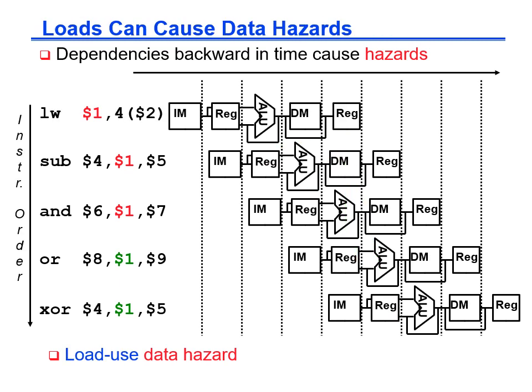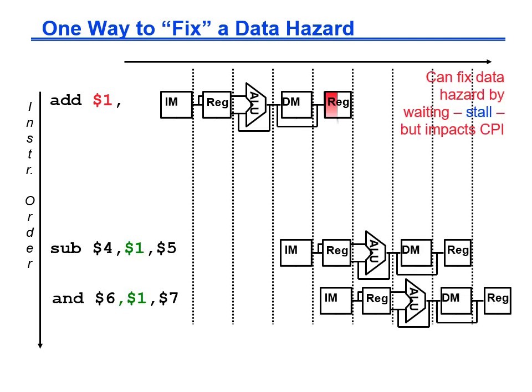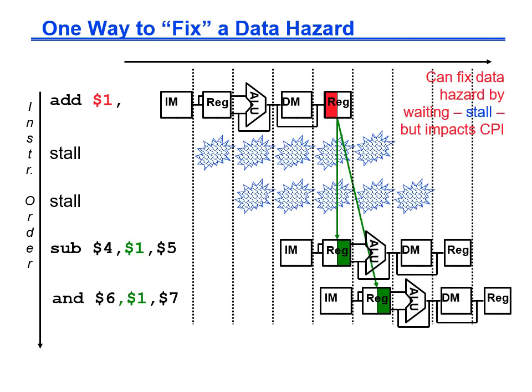The situation with load word is similar, but we will distinguish it with the name load-use hazard. The simplest solution for data hazards is to stall the pipeline so that the dependent instruction waits until the correct value is available in the register file. This solution has a negative effect on CPI, adding one to two additional cycles whenever there is a data hazard between instructions in the pipeline.